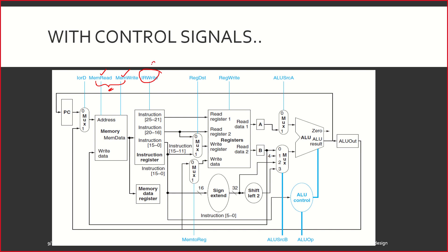MEM read and MEM write are going to control the memory operations. IR write will let you write the instruction into the instruction register, and only when the instruction is written into it will we be able to read it. REG DST, we know what it is — it selects the register destination. REG write we know. ALU SRC — now you see there is a new inclusion. Last time it was just ALU SRC, because there were only two inputs to the ALU and only one had a multiplexer. Now we have multiplexers at both ends of the ALU, so both need control signals.